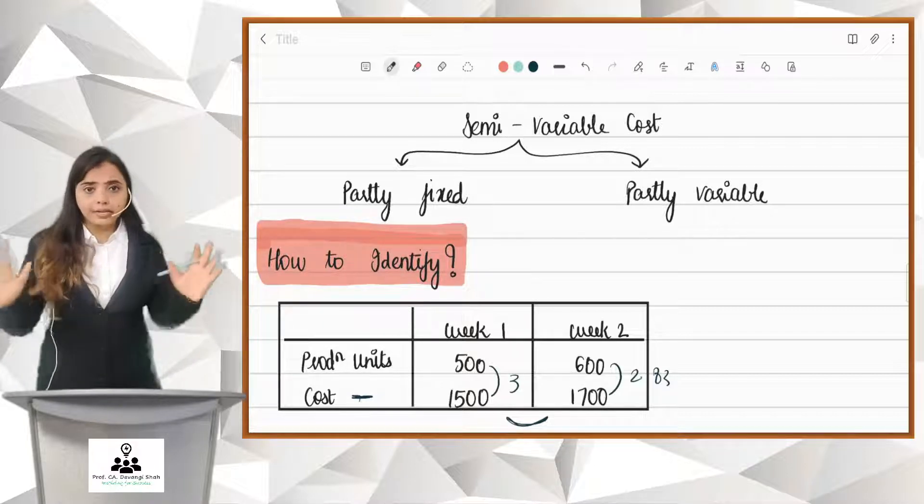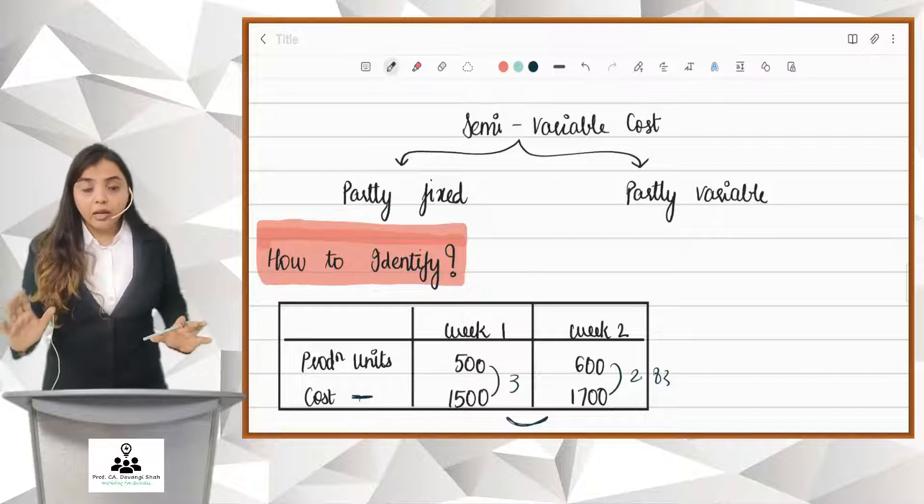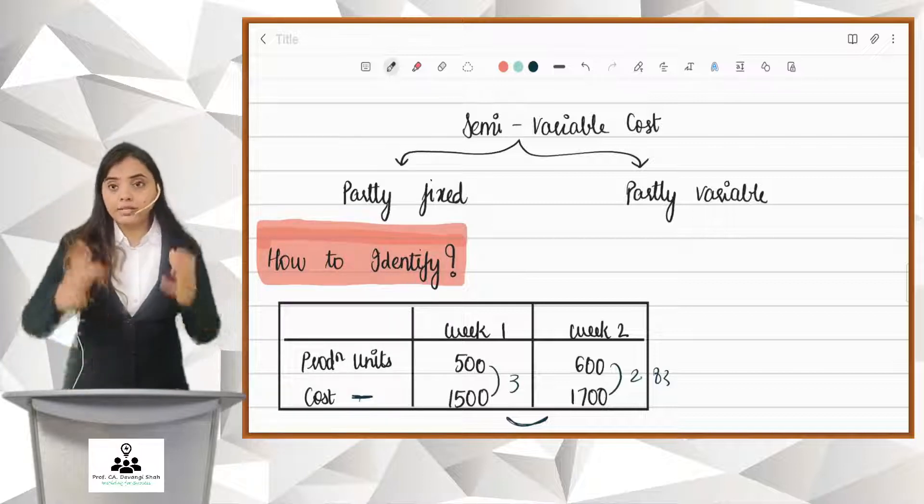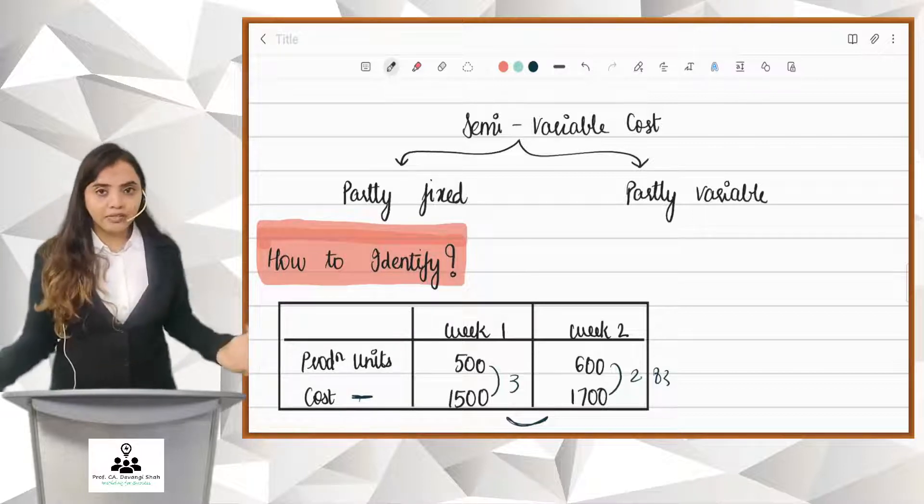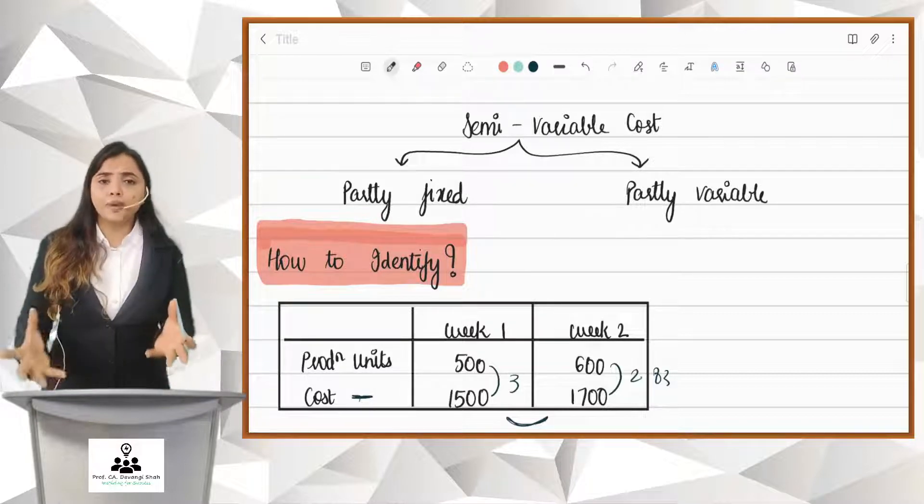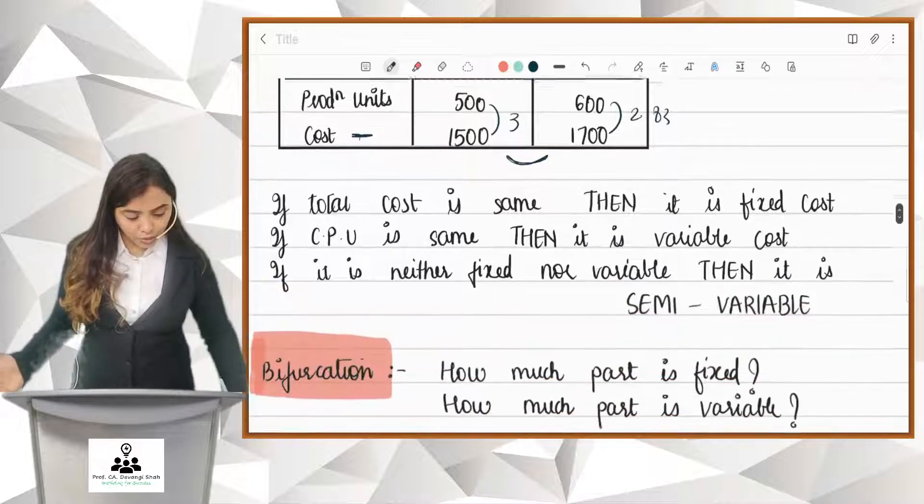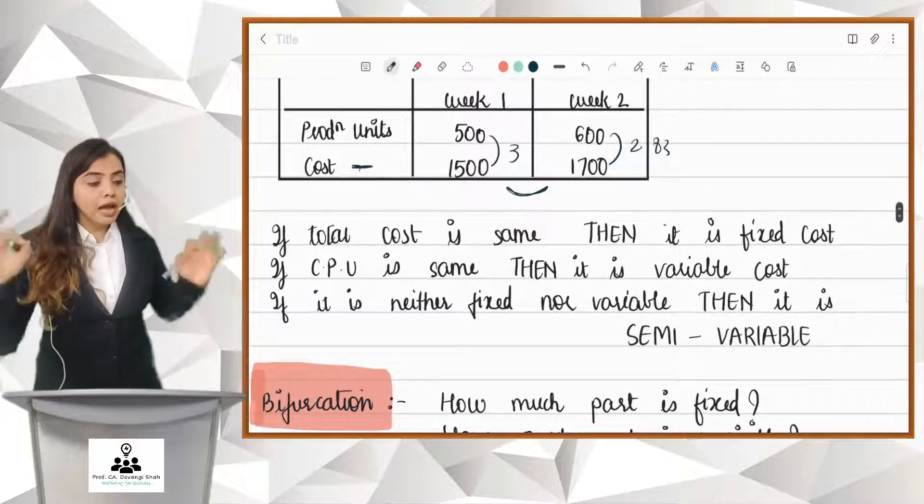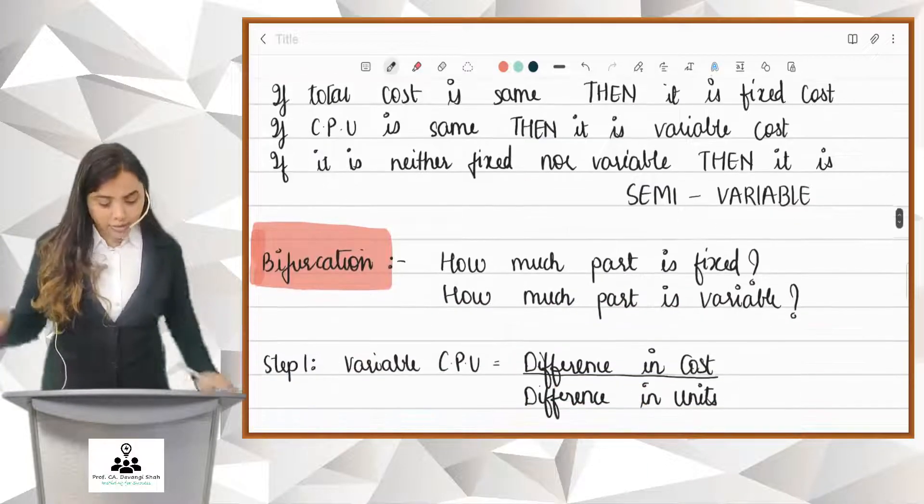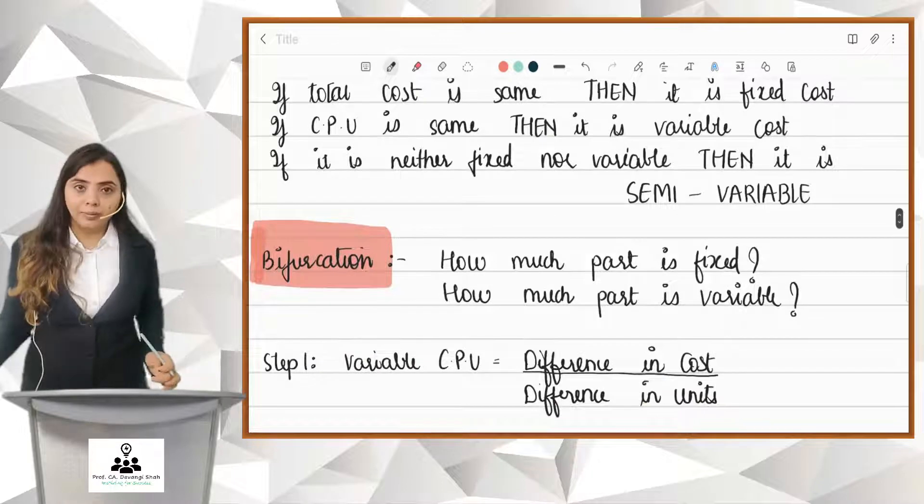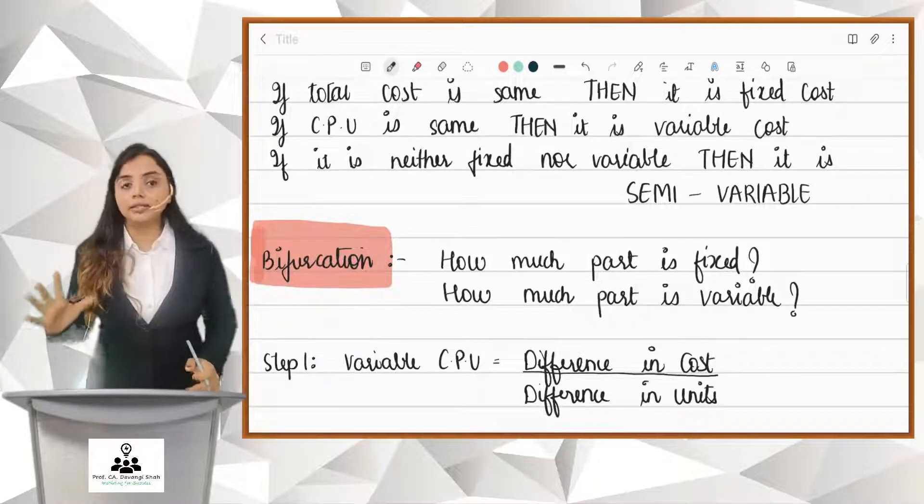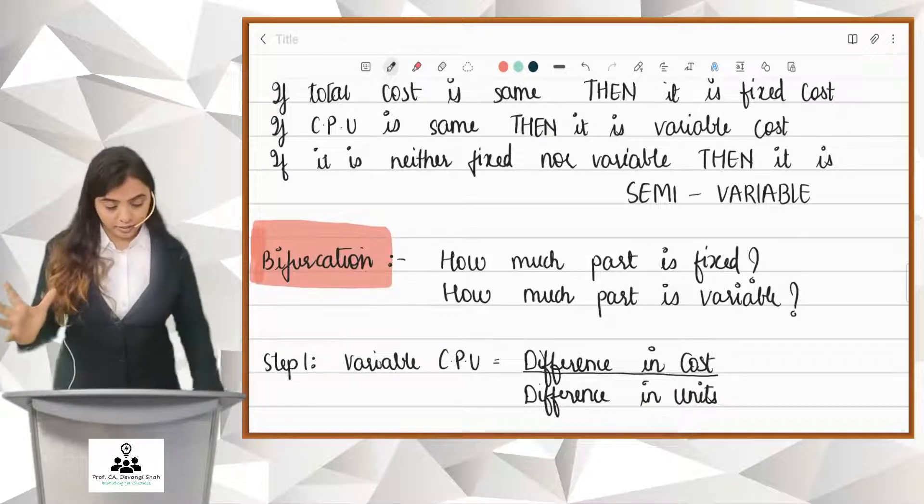Now, once you have identified that this cost is semi-variable, now I need to know further that semi-variable means partly fixed, partly variable. Then, how much part of this is fixed and how much is variable? Basically, what I want to do now is bifurcation. How much part is fixed and how much part is variable? To bifurcate, there are these three. How will you think? Understand?